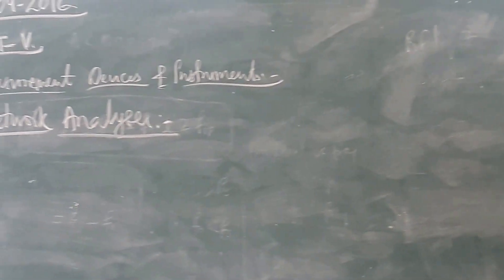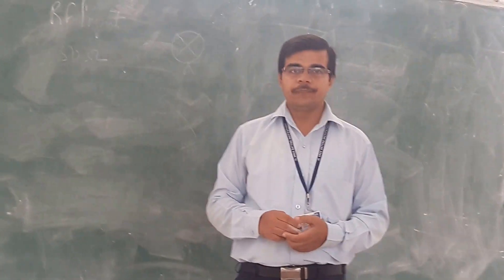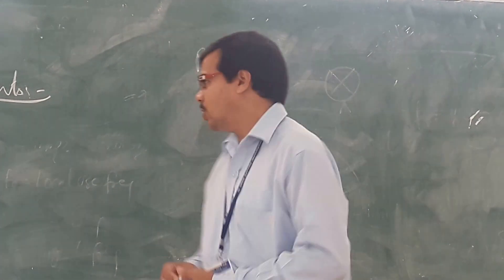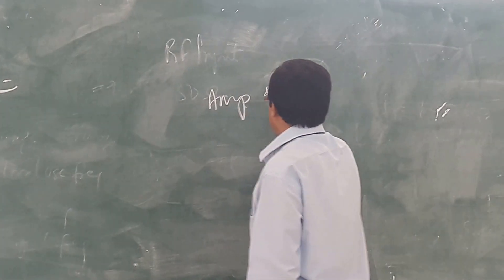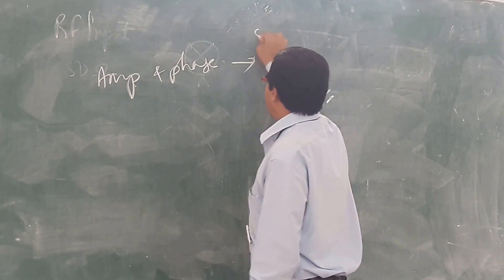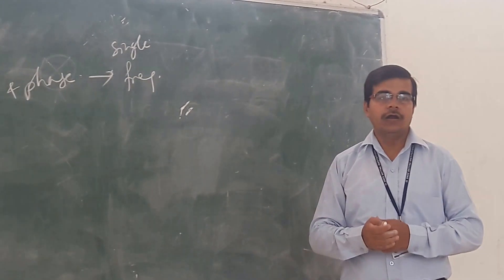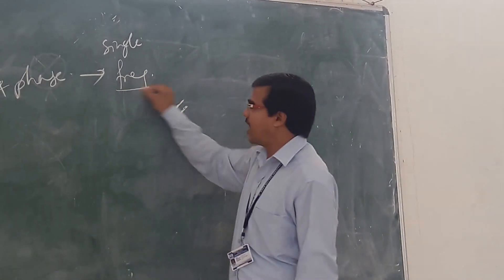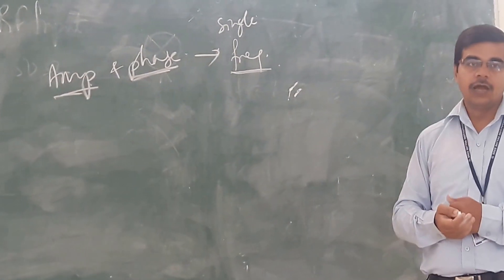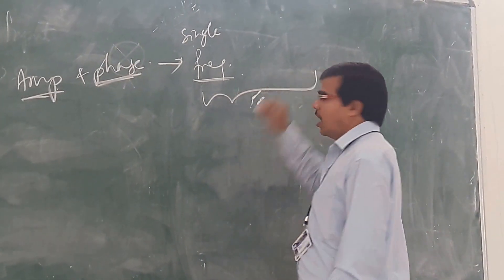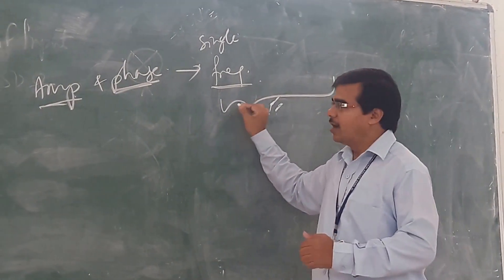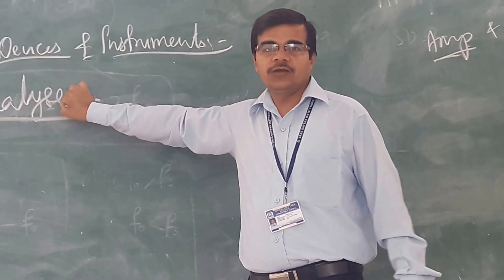Network analyzer — we are using it for microwave frequency measurement only. You can compare your network analyzer with a slotted line. If you are going for a slotted line, there we are measuring amplitude and phase, but that is for a single frequency only. If we are having a range of frequencies, and we need to measure amplitude and phase across that range, we have to use the network analyzer.